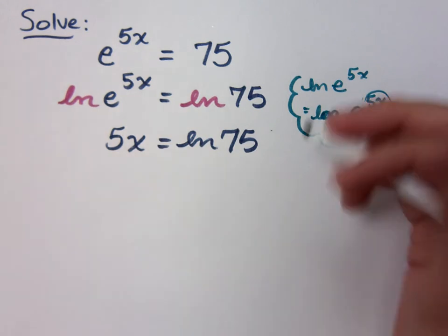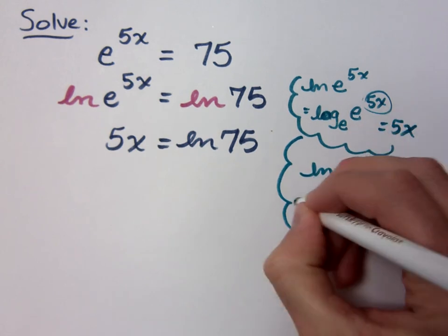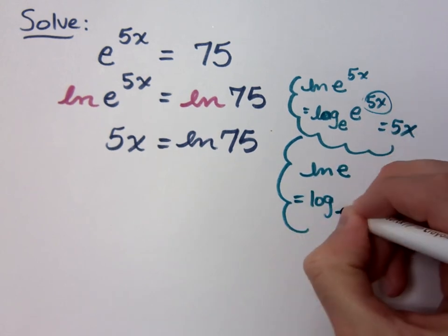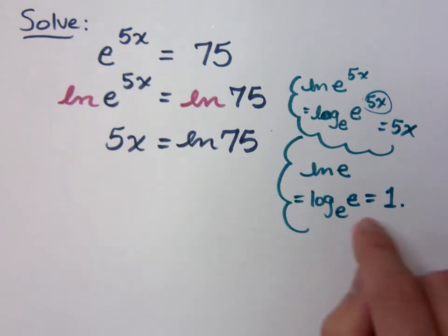No, no. If I say the natural log of e, that means log with base e of e, and that equals 1. Remember, this expression means e to the what power equals e? e to the 1st is equal to e.